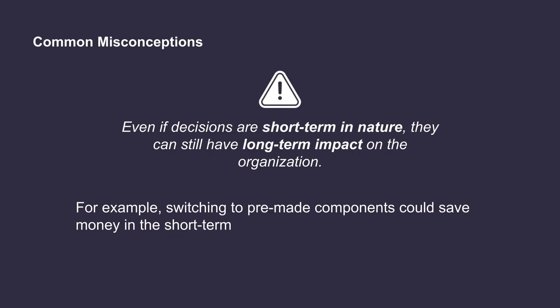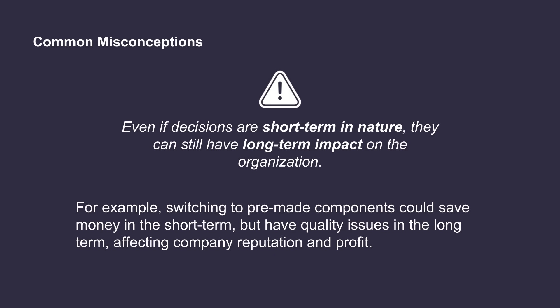Say for example, a company is faced with the decision whether to continue making their product from scratch or to buy some of the components pre-made from another supplier. While it may be a good short-term decision to buy these components pre-made in order to save some money, there could be long-term consequences associated with this. After a few years of doing this, customers might start complaining about major quality issues with the product. Since the company is buying some of the parts from another supplier, they may not have full control and oversight over the quality of the finished product. This could result in damage to the company's reputation and ultimately cost them profit in the long run. As a result, it's very important for companies to take time to consider the long-term impact that their short-run decisions can have.